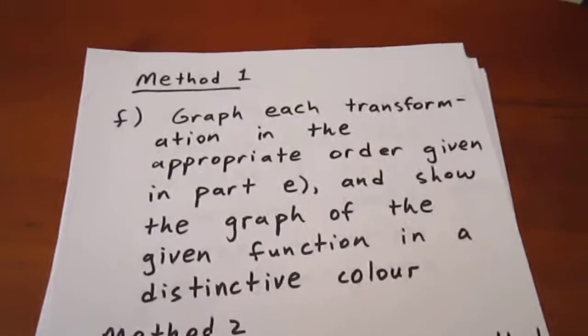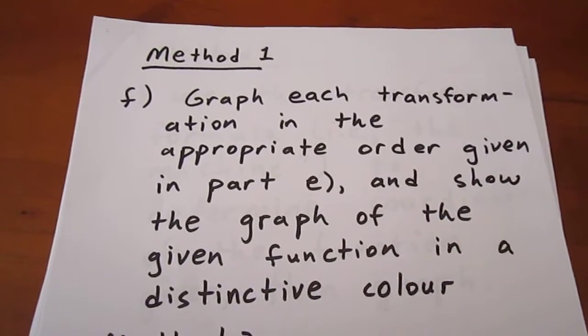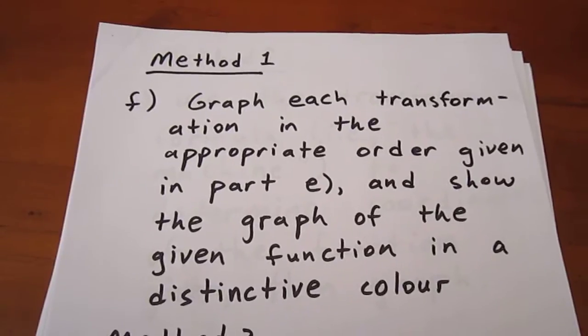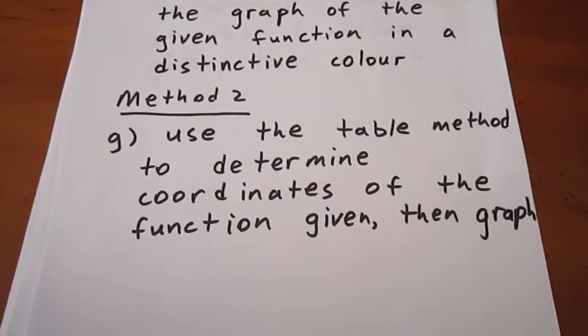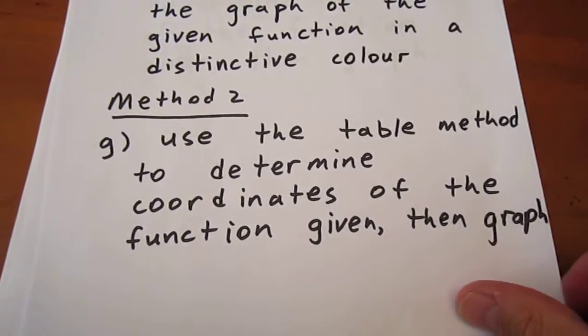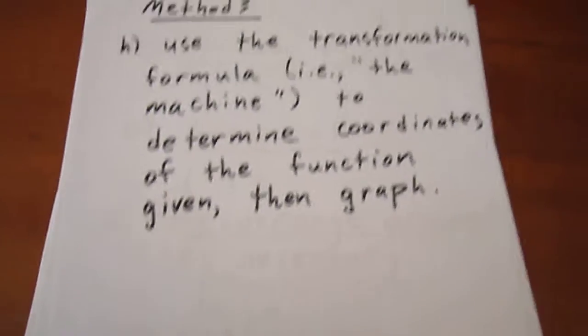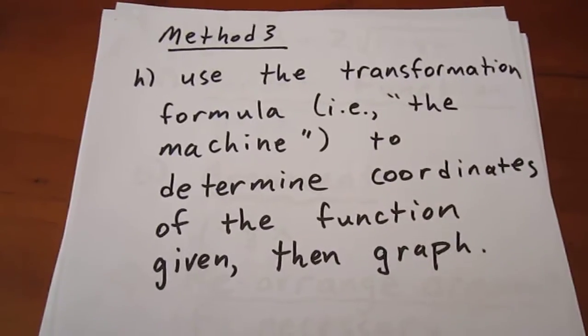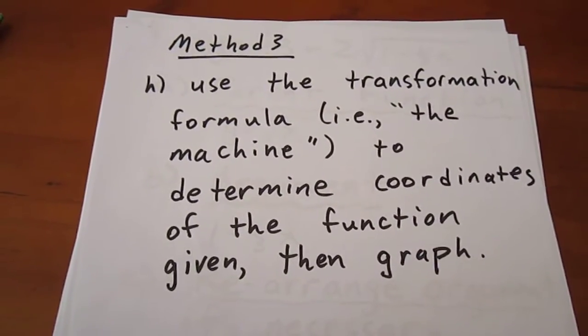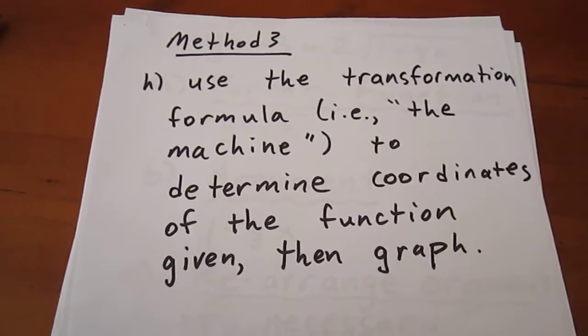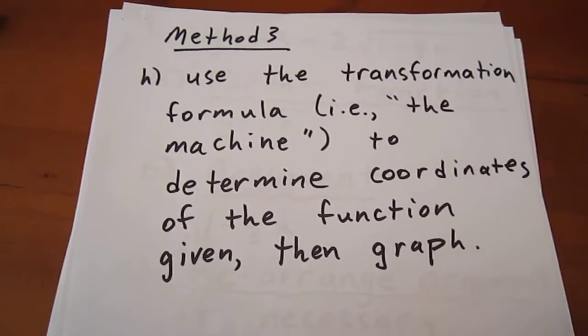We'll then try to graph it in three different ways. We'll graph each transformation in the appropriate order. Second method will be more direct. We'll use a chart to determine coordinates of the function given. The third method will be pretty direct as well. We're going to use the transformation formula, which I like to call the machine, to determine the coordinates of the function given, then we'll graph.